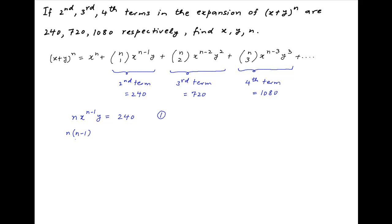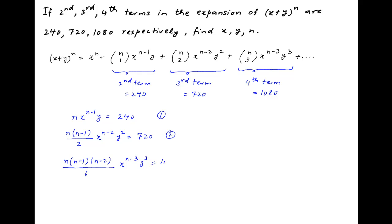The third term, which is equal to n(n-1)/2 times x^(n-2) times y squared, is equal to 720. Let's call this equation 2. And the fourth term, which is equal to n(n-1)(n-2)/6 times x^(n-3) times y cubed, is equal to 1080. Let's call this equation 3.